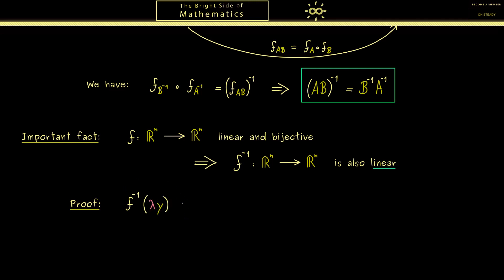Hence we start by putting the vector lambda times y into the function f inverse. And then in the first step we want to use the bijectivity of our function. This means we find exactly one vector x on the left hand side such that f(x) is equal to y. In other words we can just look at the inverse element of y. However now this means that f(x) is now inside our function f inverse. And therefore in the next step we can use that f is a linear map. This means we can pull in our scalar.